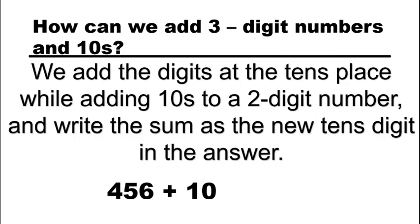To add three-digit numbers and tens, always remember: add the digit of the tens place value, then write the sum as the new tens digit in the answer. For example, 456 plus 10 — look at your tens digit, five plus one is six. Copy your hundreds and ones, so the answer is 466.